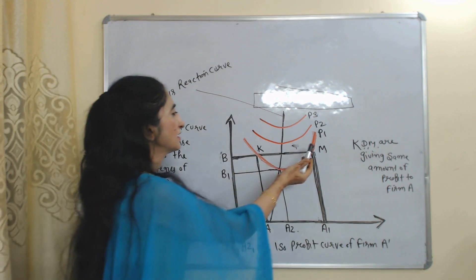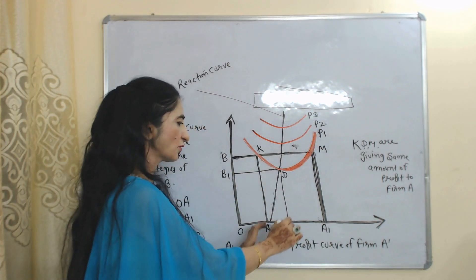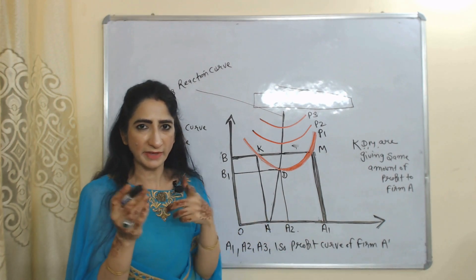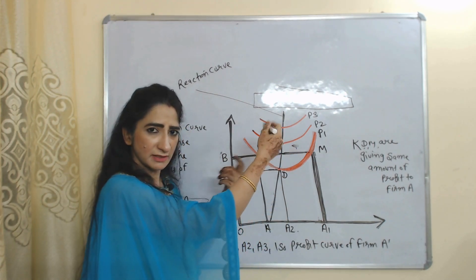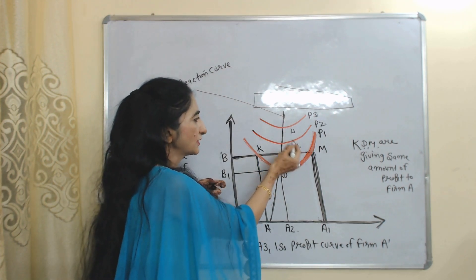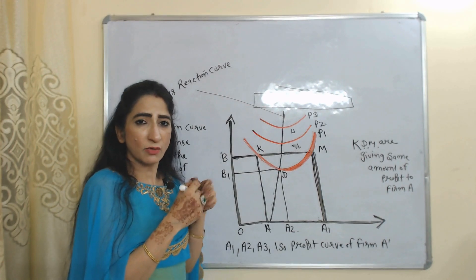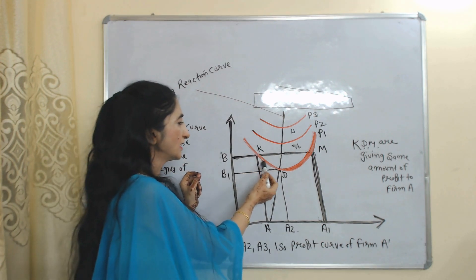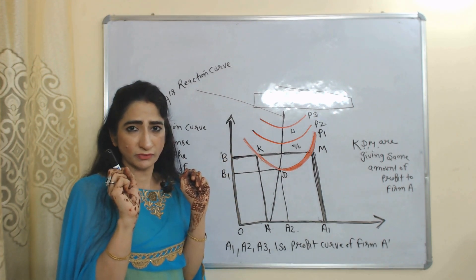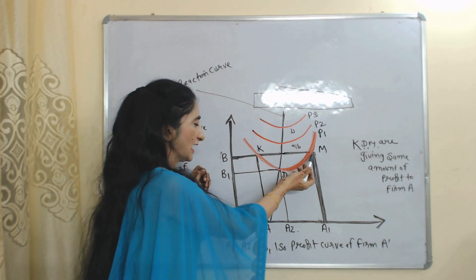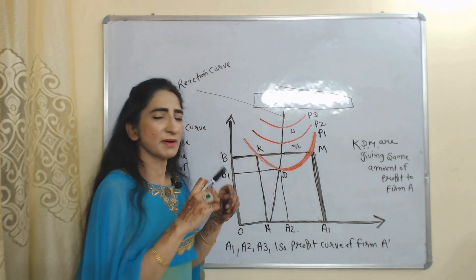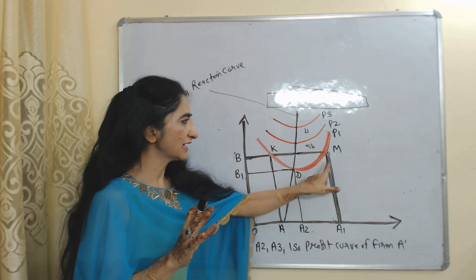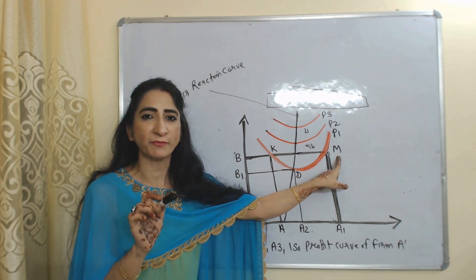P1, P2, and P3 are isoprofit curves of firm A. A higher isoprofit curve gives a higher amount of profit, and a lower isoprofit curve gives a lower amount of profit. All points on the same isoprofit curve give the same amount of profit. That means K, D, and M are all giving the same amount of profit to firm A.